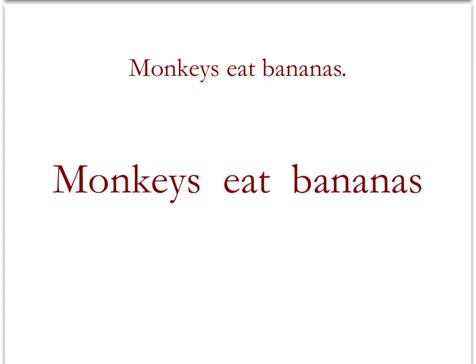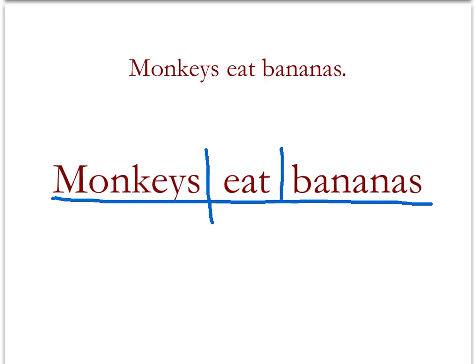What happens if we have a direct object? In this sentence, 'monkeys eat bananas,' we ask the question: what do monkeys eat? Since we answer that question with bananas, bananas is the direct object. Going back to our steps, we place the subject, the verb, and the direct object on a line together, then we underline that group. Next, we separate the subject from the verb by drawing a vertical line that does cross the underline. Then, we separate the verb from the direct object with a vertical line that does not cross the underline. This is what we do when we have a direct object in the sentence.